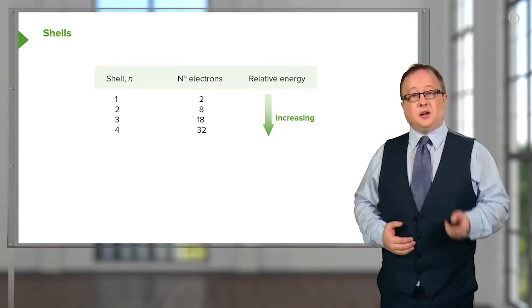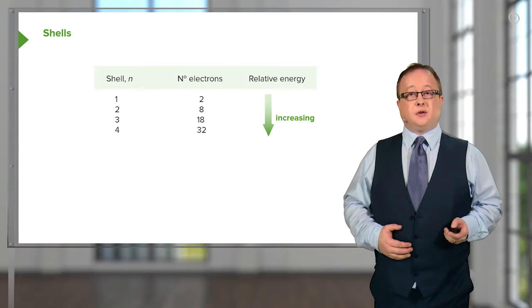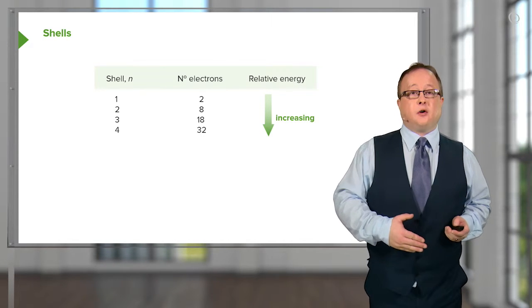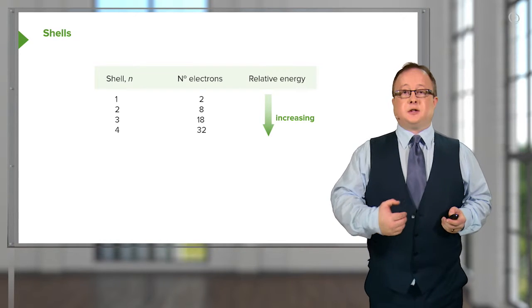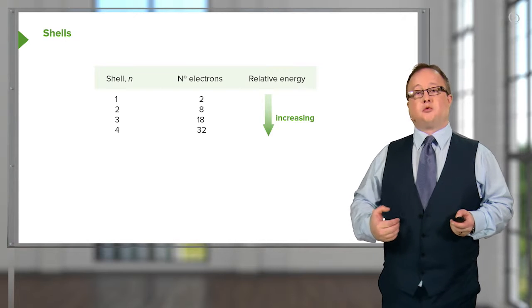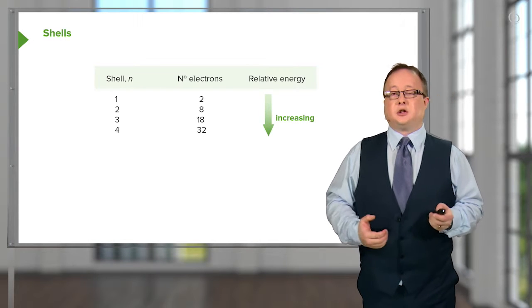The relative energy of these shells increases as we move further away. But, as I indicated in the previous slide, this means that the relative energy required to remove an electron from a shell actually decreases.